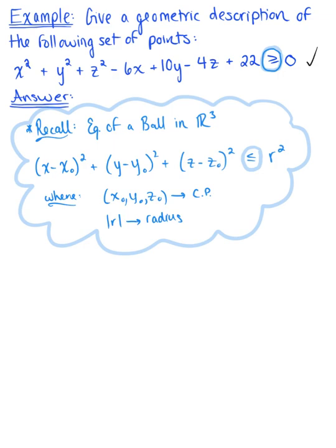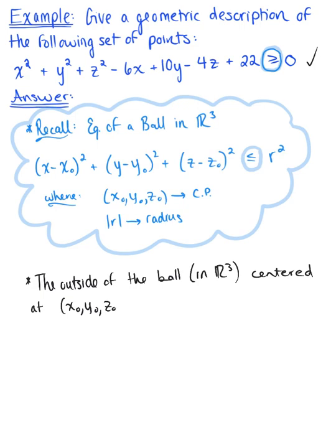Well, this means with the equation that we're given, this is the outside of the ball centered at some point with a radius of r. So here, we are working with the outside of a ball in R3 centered at that point (x naught, y naught, z naught) with a radius of r.